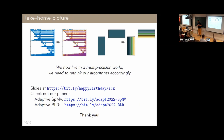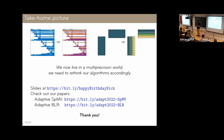My take-home message: because of the evolution of the floating-point landscape, we now have so many precisions available that we need to rethink how we design our algorithms. I've given two examples in different application frameworks — adaptive precision SpMV for iterative solvers and adaptive precision for block low-rank factorizations — where I think this approach has significant potential. Thank you for your attention.